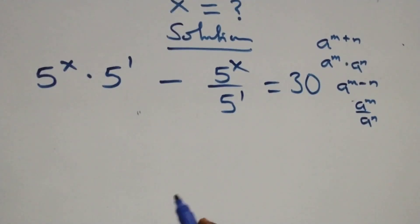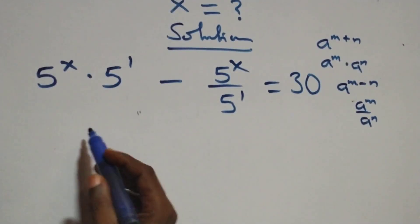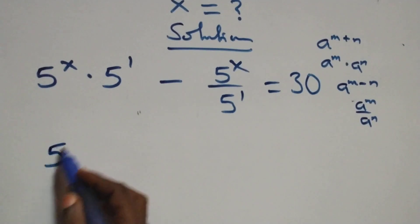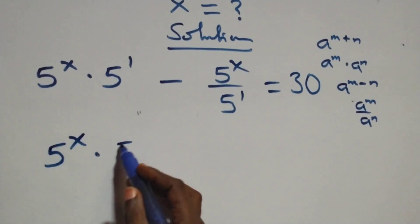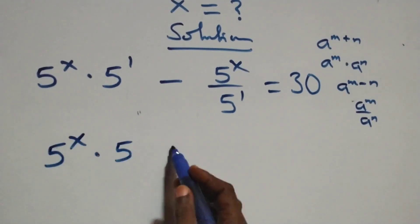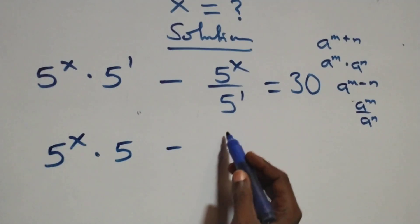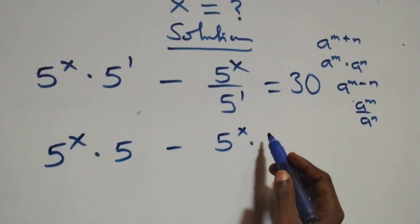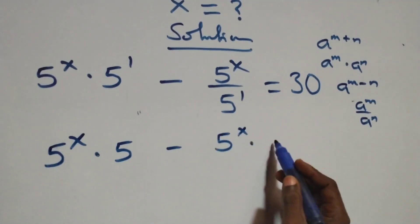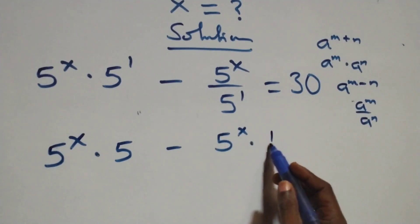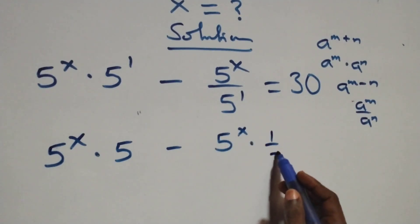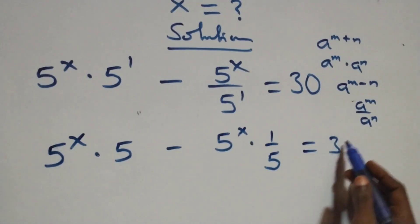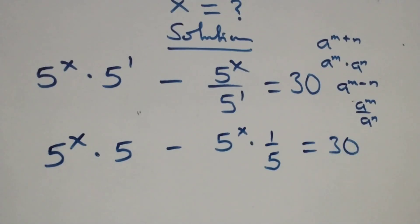The next step: we can write this as 5 raised to power x times 5 raised to power 1, that's 5, then minus — we separate this and we have 5 raised to power x times 1 over 5 raised to power 1, which is 1 over 5, equals 30.